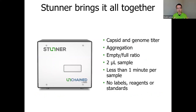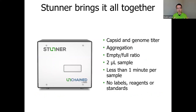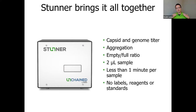But what if you could combine them? That's exactly where Stunner comes into the equation, because Stunner brings together those two technologies to give you very unique capabilities for characterizing your AAV. First and foremost, Stunner gives you a rapid capsid and genome titer from only two microliters of sample in less than a minute per sample, all done without any labels, reagents, or standards. At the same time, Stunner also gives you results on whether your sample is aggregated via DLS, and tells you the empty-full ratio based on the balance of protein and DNA present in your AAV.